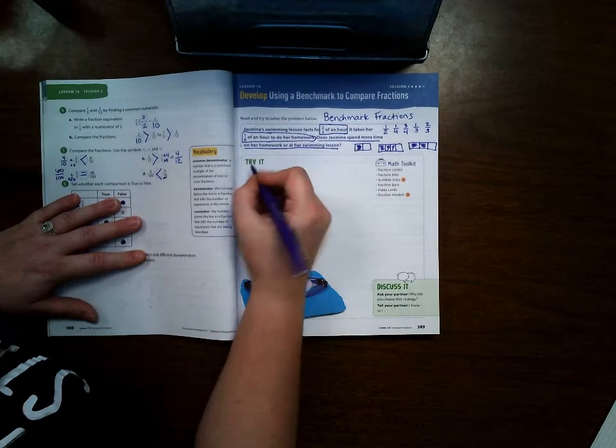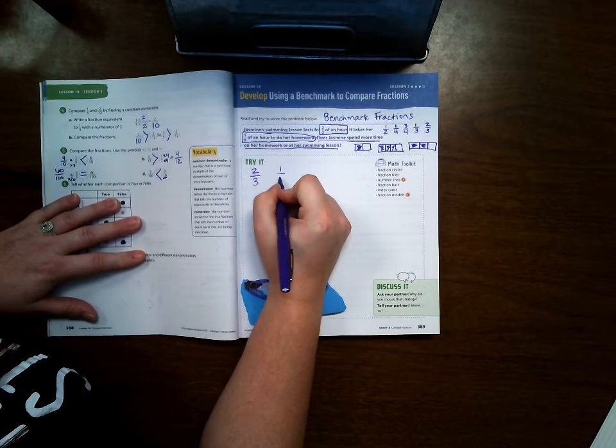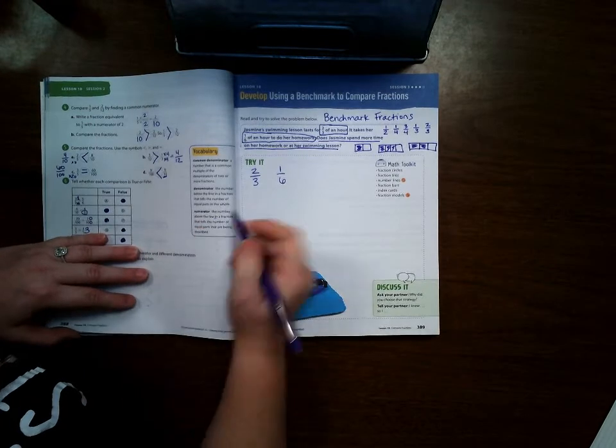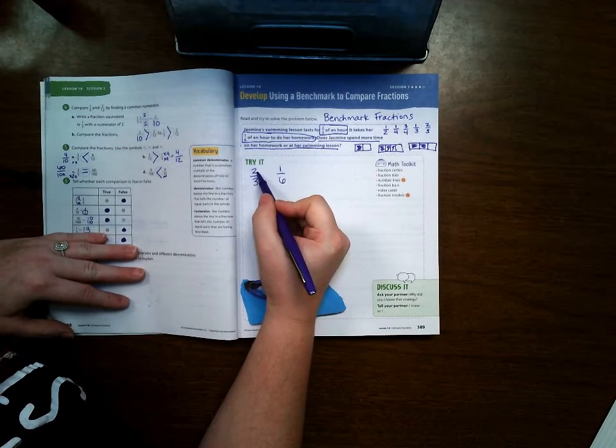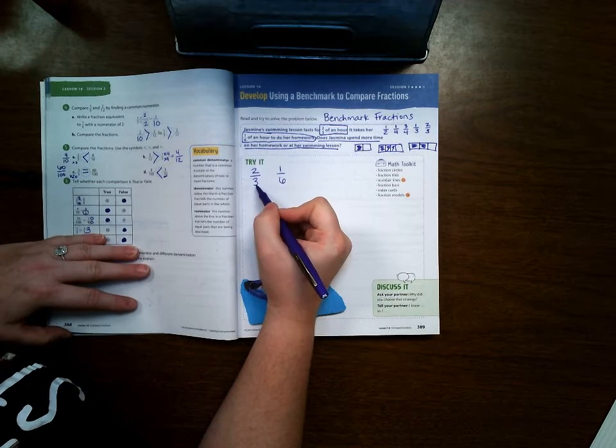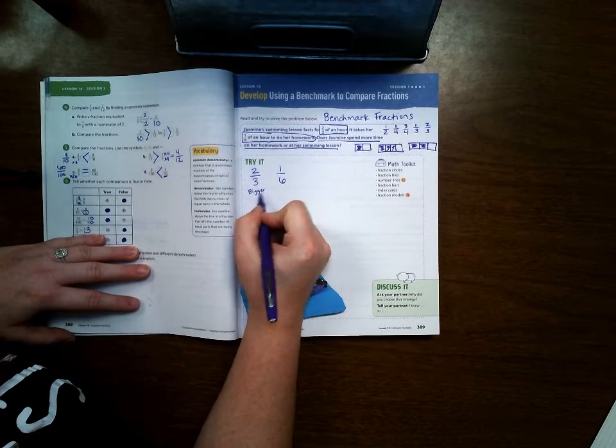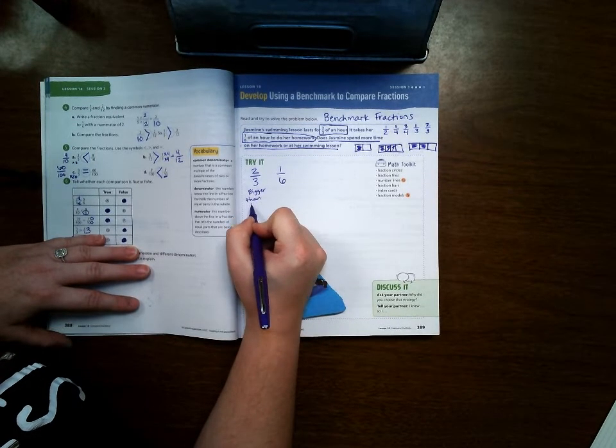Okay, so we are comparing two-thirds to one-sixth. Well, two-thirds, when I look at it, I know that two is more than half of three. So this is bigger than one-half.